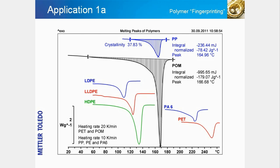The slide shows an example of polymer fingerprinting and identification. The different plastics shown in the diagram can be identified by measuring the temperatures at which they melt. The melting peaks of polypropylene (PP) and polyoxymethylene (POM) show that identification depends both on the melting temperature and on the enthalpy of fusion. If the type of polymer is known, the degree of crystallinity can be determined by integrating the area under the peak.